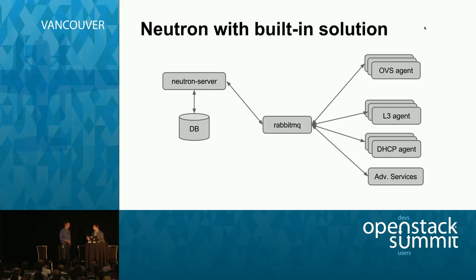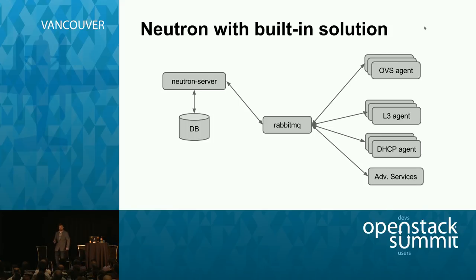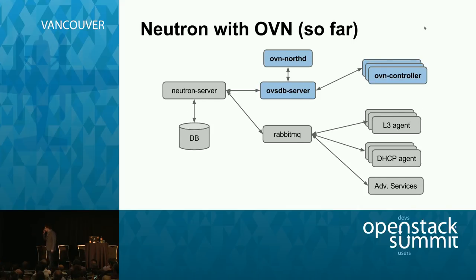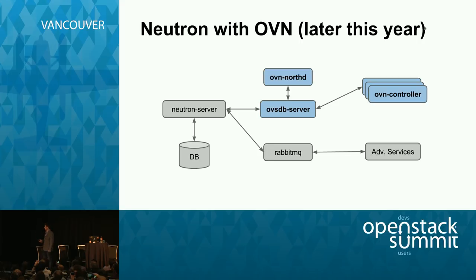We wanted to show OVN in the context of Neutron. In a typical Neutron deployment using the default reference implementation, you see all these services running. With the current OVN implementation, it replaces the Layer 2 agent — the OVS agent that runs on every hypervisor. Eventually, as we implement more features by end of year, it will also replace the L3 agent and the DHCP agent.